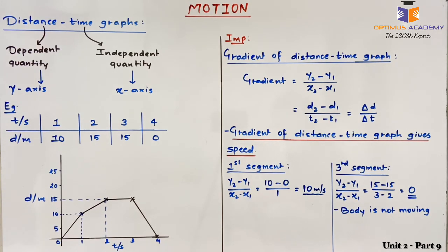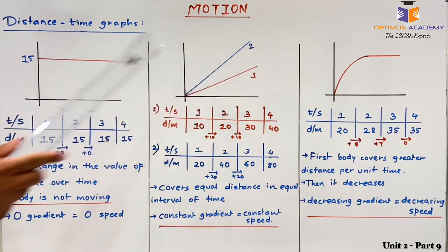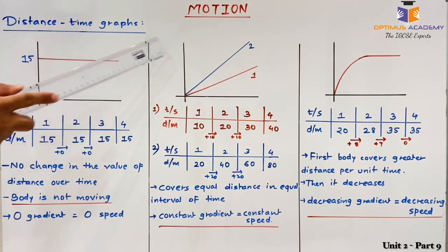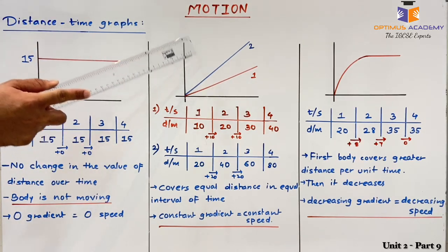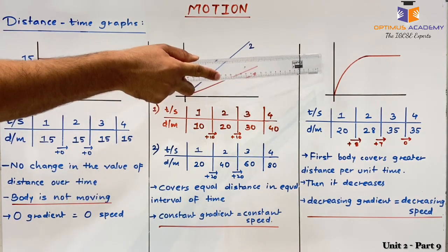We can also understand this practically: since the body is not moving between 2 and 3 seconds, its speed is 0. In the next part of this video we are going to discuss different types of gradient in distance time graphs — specifically a graph with zero gradient, a graph with constant gradient, and a graph with decreasing gradient.